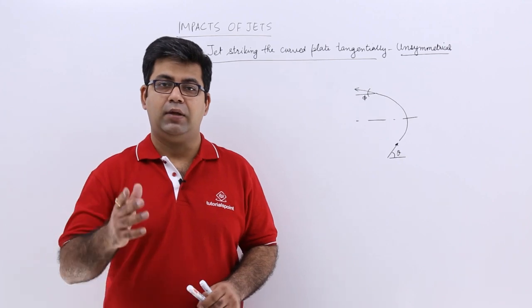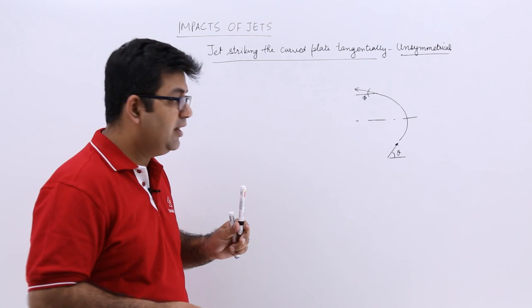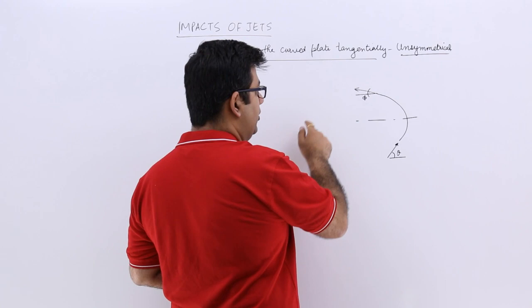Now let's talk about a case when the plate is unsymmetrical, meaning that at inlet the horizontal angle is theta and at outlet the angle becomes phi. The difference is the inlet angle and the outlet angle.